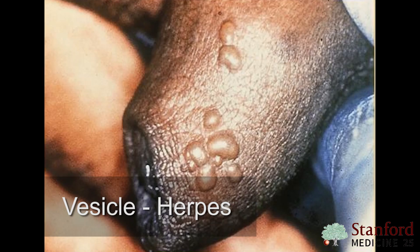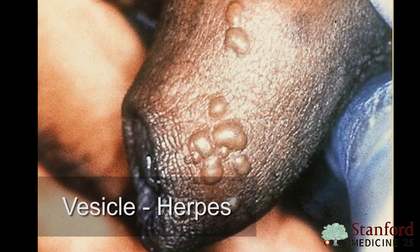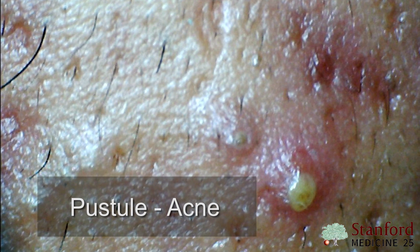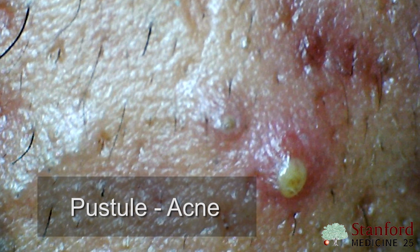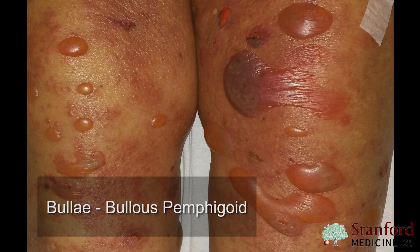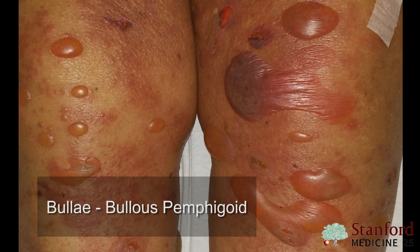A vesicle is a clear fluid-filled lesion. Herpes is an example of a vesicle. If we have something that looks like a vesicle but is instead filled with pus or purulent material, we call that a pustule. We see pustules in acne and certain kinds of drug eruptions. A large vesicle greater than 1 cm is called a bulla, and we see bullae in friction or blistering conditions like bullous pemphigoid.